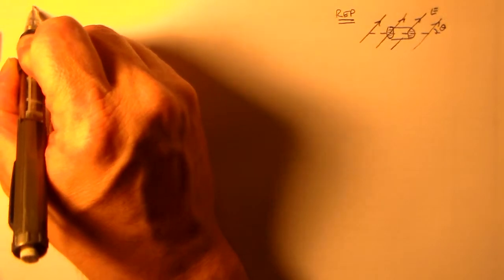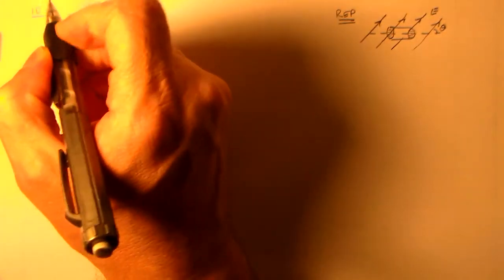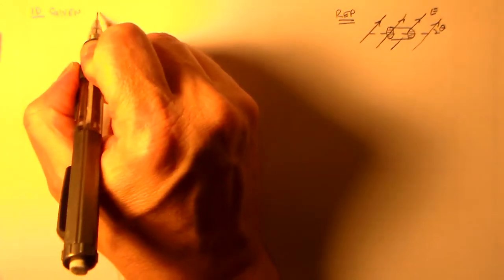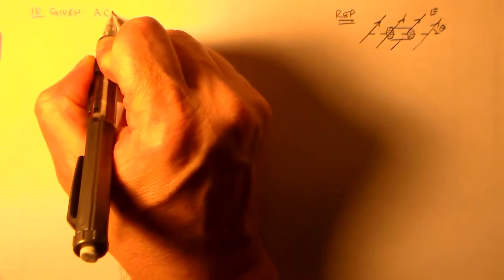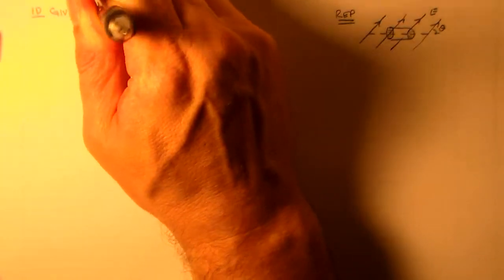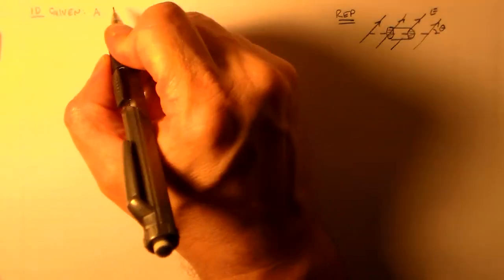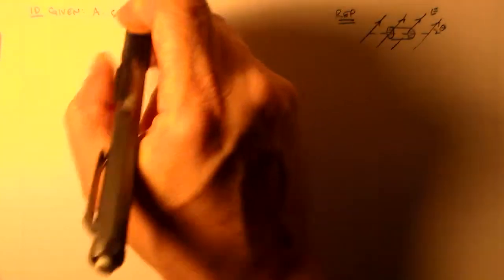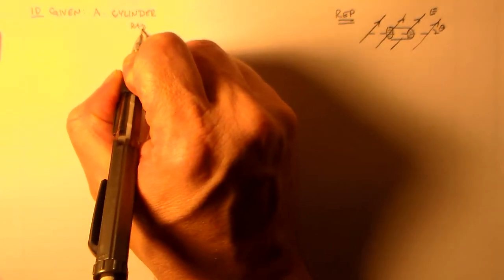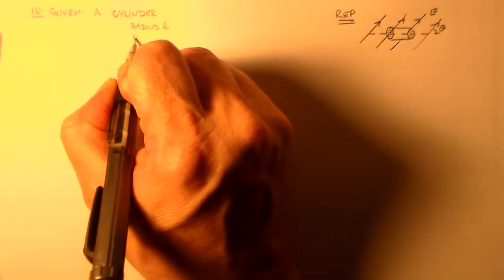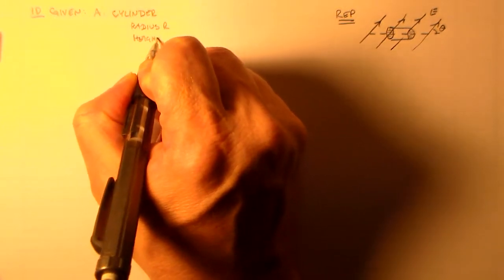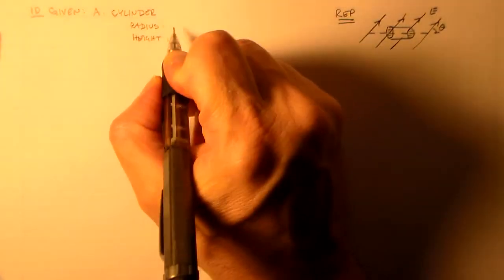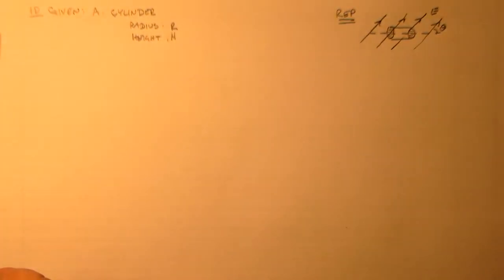All right. So what do we have in this problem? So, as I said, we have a cylinder. Okay, and that has a radius R and a height H.